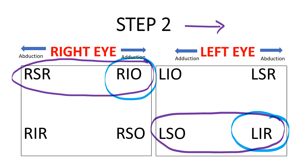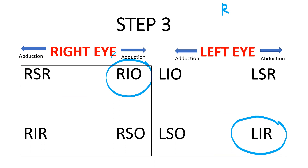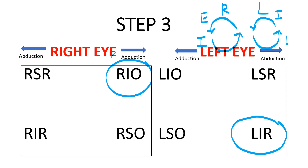Step three says it worsens on right head tilt. On right head tilt, the right eye extorts and the left eye intorts, so to maintain equilibrium the intorter of the right eye and the extorter of the left eye must work. If this is getting worse on right head tilt, it means either the intorter of the right eye or the extorter of the left eye are not functioning properly. We do not have an intorter of the right eye in our narrowed list, but we do have an extorter of the left eye — so the answer is left inferior rectus.